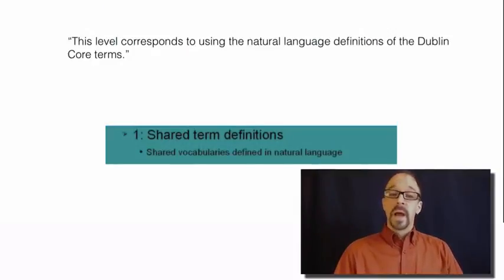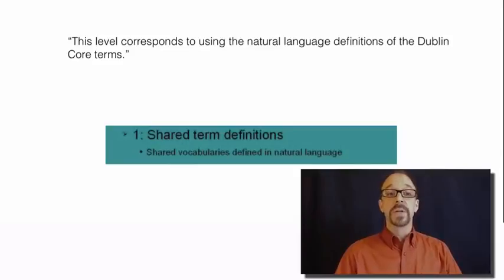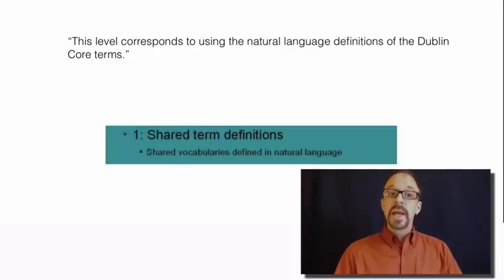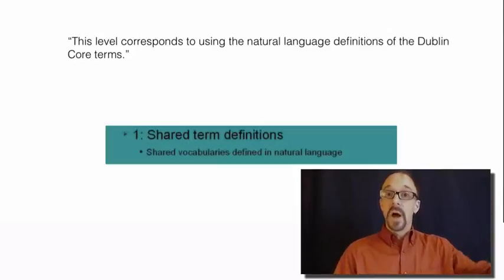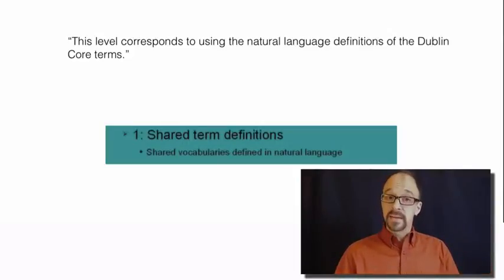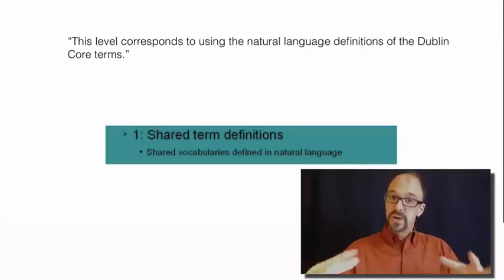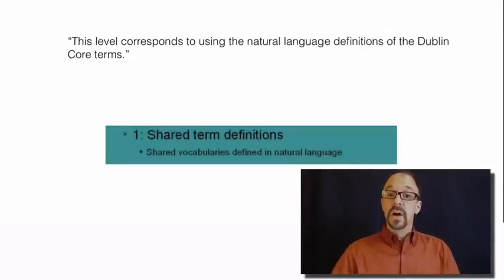Dublin Core articulates four levels of interoperability. Level one corresponds to using the natural language definition of Dublin Core terms — this is very informal interoperability. All you need to do to comply with level one is use the shared semantics, the language of Dublin Core. You need to use the elements, and that's it — so instead of saying 'author' or 'filmmaker,' you say 'creator,' but you don't need to do anything more than that.